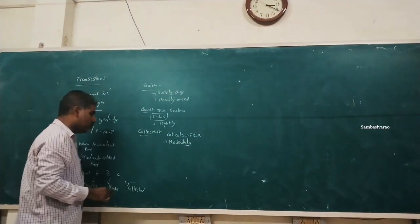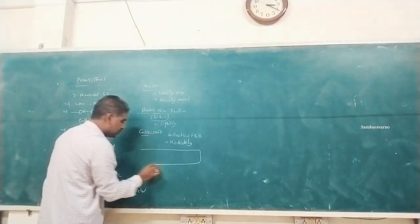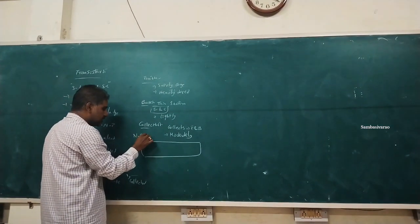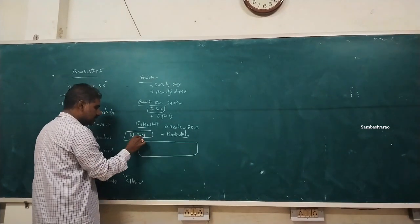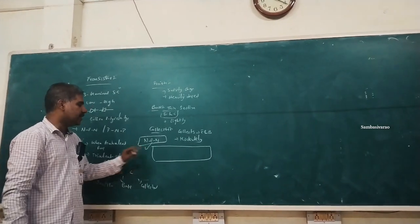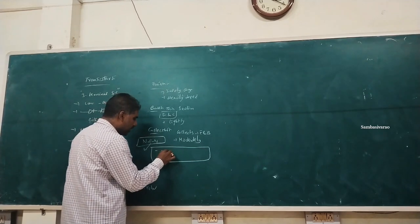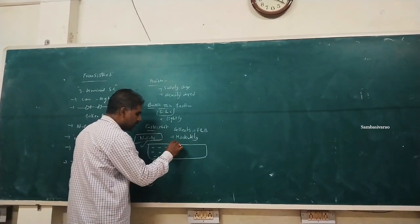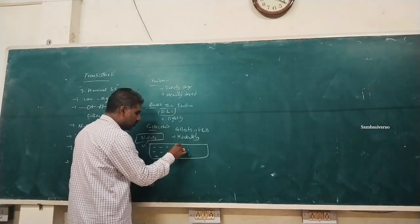Moving on to NPN: it consists of two N-type materials separated by a thin section of P-type material, and is known as an NPN transistor. In NPN, the majority charge carriers are electrons and the minority charge carriers are holes.